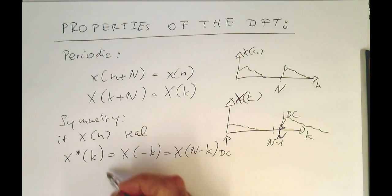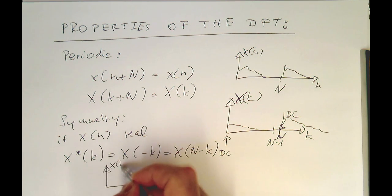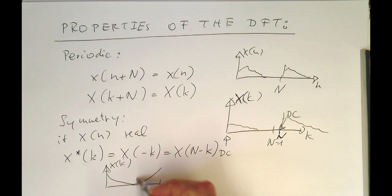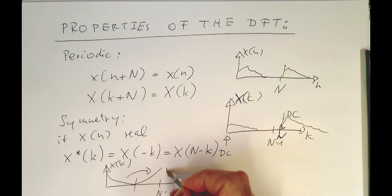Remember, this was the idea that this is n minus 1, that's our x of k, that if we have the spectrum here, we're getting a mirror on the other side here, in case of a real signal x of n.